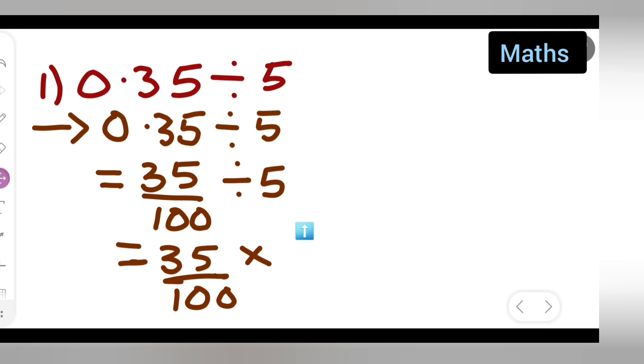Now 5 ones are 5, 5 sevens are 35. So what is left? 7 upon 100 is left.